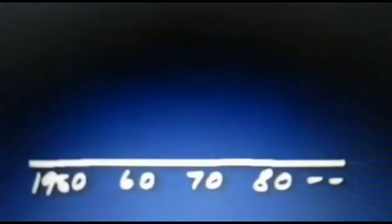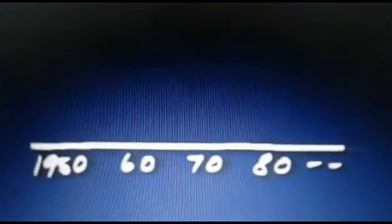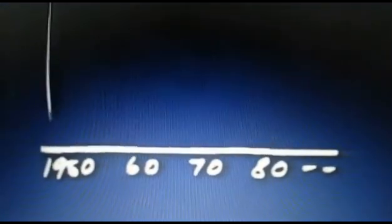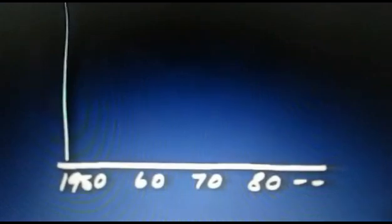In this model, the horizontal axis is time, in decades. The vertical axis is quality — the salability of the product.